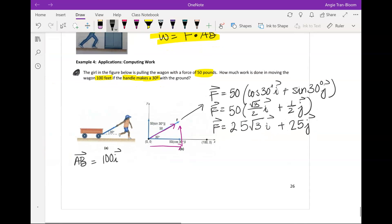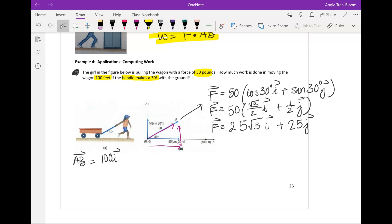We have the AB vector in essence. The dot product work equals the dot product of these two, which is A1 times A2 plus B1 times B2. A1 is going to be 25 rad 3 times A2 is 100 plus B1 is 25 rad 3. So this whole second term is gone.